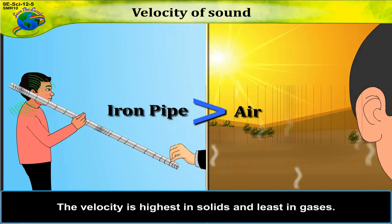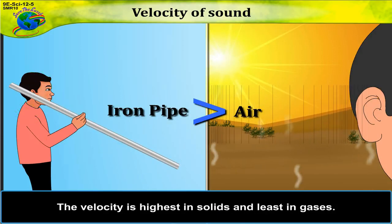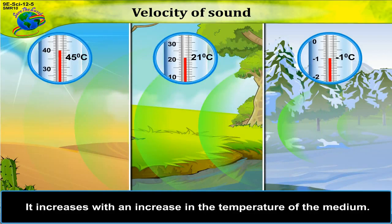The velocity is highest in solids and least in gases. It increases with an increase in the temperature of the medium.